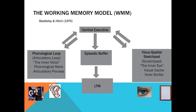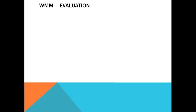To recap the model: the central executive at the top attributes attention to either the phonological loop or the visuospatial sketchpad. Information from both of those feeds into the episodic buffer, and from the episodic buffer, information can pass into long-term memory.